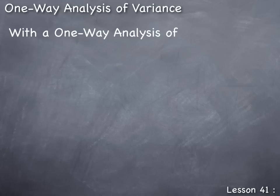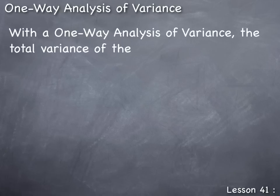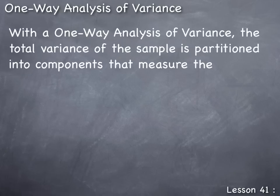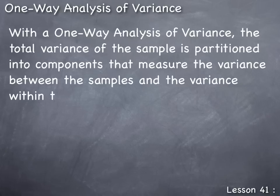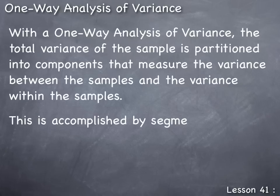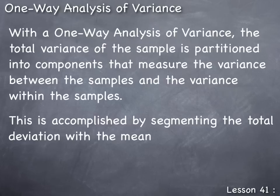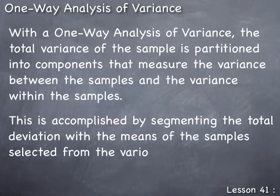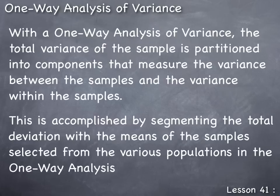With a one-way analysis of variance, the total variance of the sample is partitioned into components that measure the variance between the samples and the variance within the samples. This is accomplished by segmenting the total deviation using the means of the samples selected from the various populations in the one-way analysis of variance.